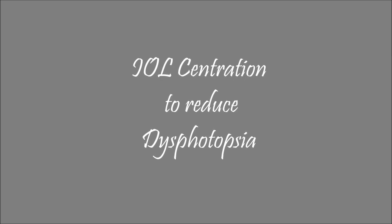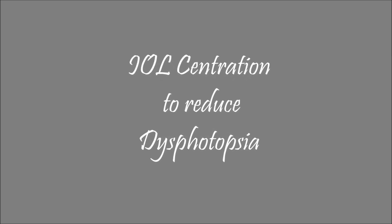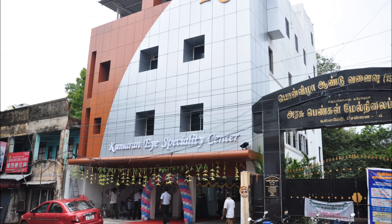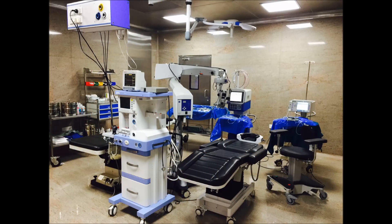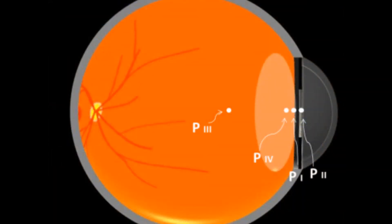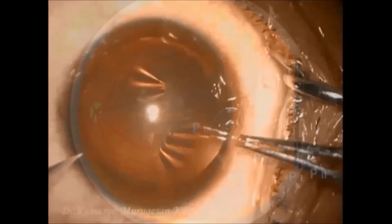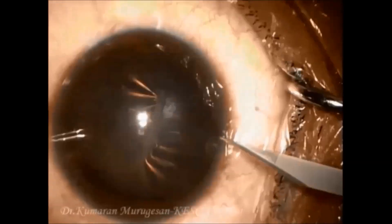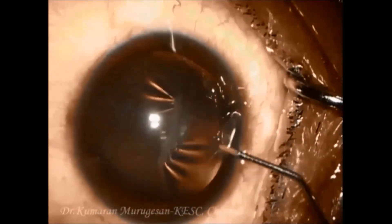All presbyopia-correcting IOLs usually produce glare and halos, and these symptoms of dysphotopsia are more pronounced when the IOL is not centered on the patient's visual axis.